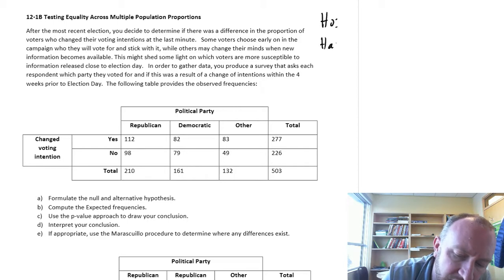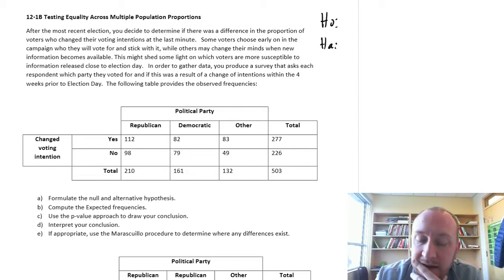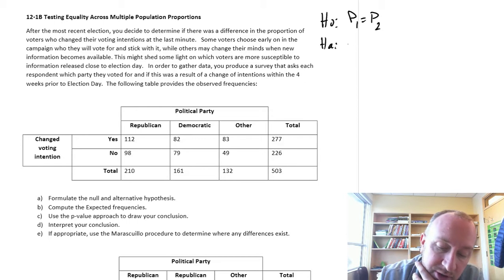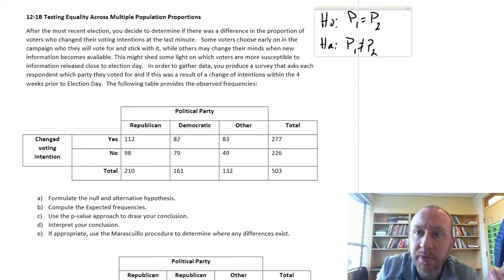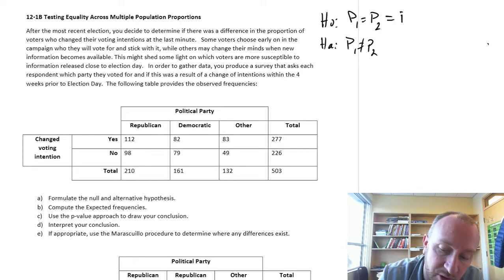Again, in earlier modules we had looked at testing for equality across only two population proportions. So they looked something like this, it's either equal or it's not equal.